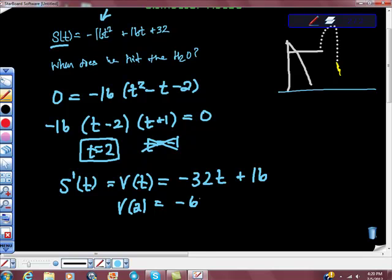That gives us negative 64 plus 16. And what is that number? It's negative 48. So he's going negative 48 feet per second.